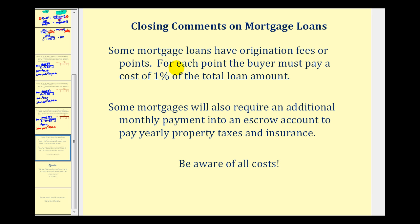A couple of closing comments on mortgage loans: some mortgage loans have origination fees or points — for each point, the buyer must pay 1% of the total loan. Some mortgages will also require an additional monthly payment into an escrow account to pay yearly property taxes and insurance. It's important to be aware of all costs when taking out a loan. I hope you found this video helpful.